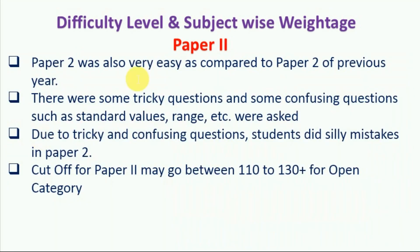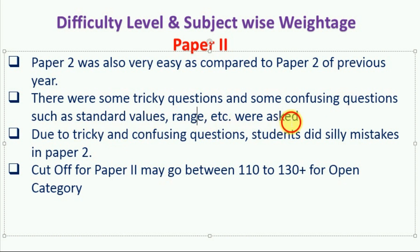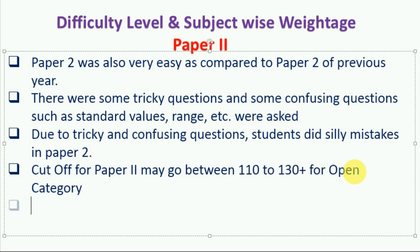Now talking about Paper 2 — Paper 2 was also very easy as compared to Paper 2 of the previous year. However, there were some tricky and confusing questions, such as those involving standard values and ranges. Due to these tricky and confusing questions, students made some silly mistakes in Paper 2. Considering these factors, the cutoff for Paper 2 may go in between 110 to 130 plus marks for open category.